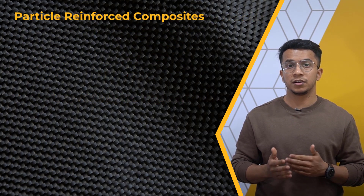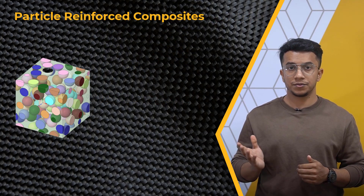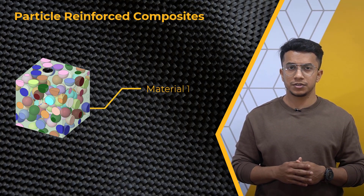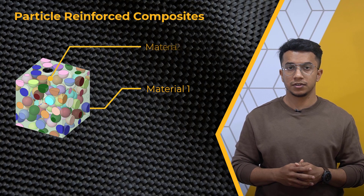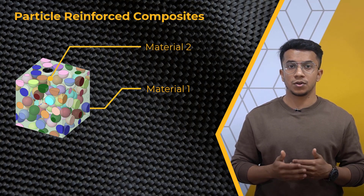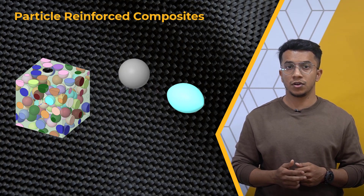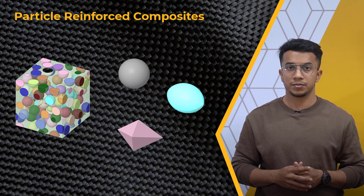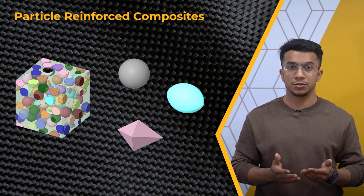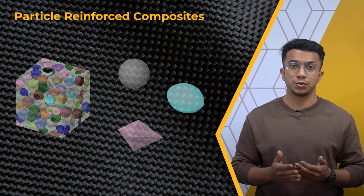Let's start with particle reinforced composites. As seen in the figure, it consists of particles of one material dispersed in a matrix of a second material. Though they can be of any size or form, the majority of the particles are spherical, ellipsoidal, or polyhedral in shape. Based on the type of reinforcement used, particle reinforced composites are further categorized into two types.